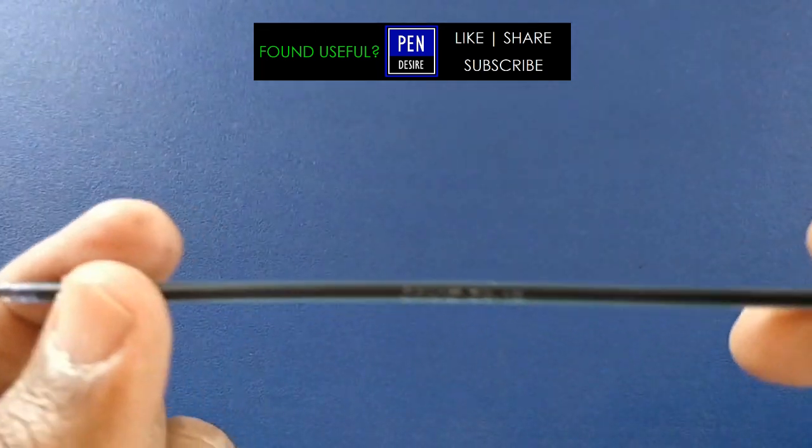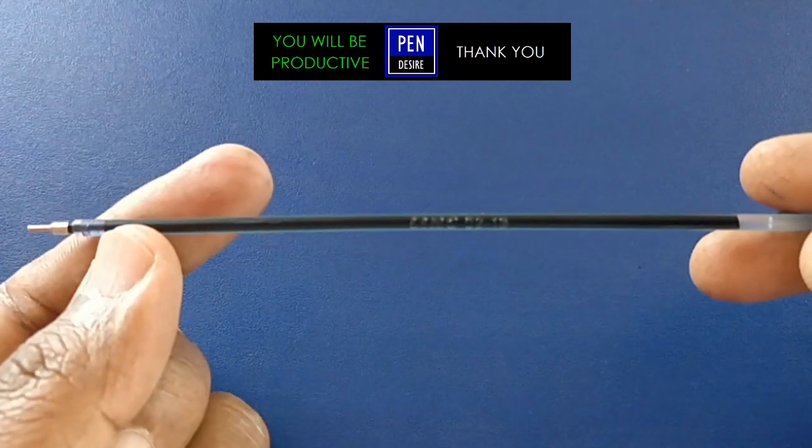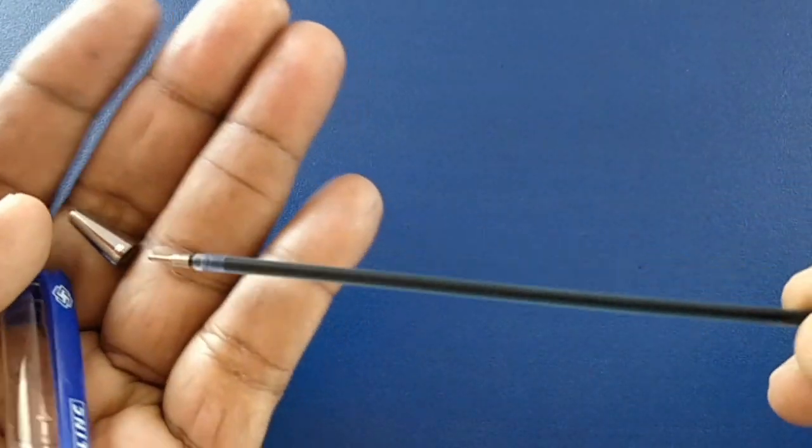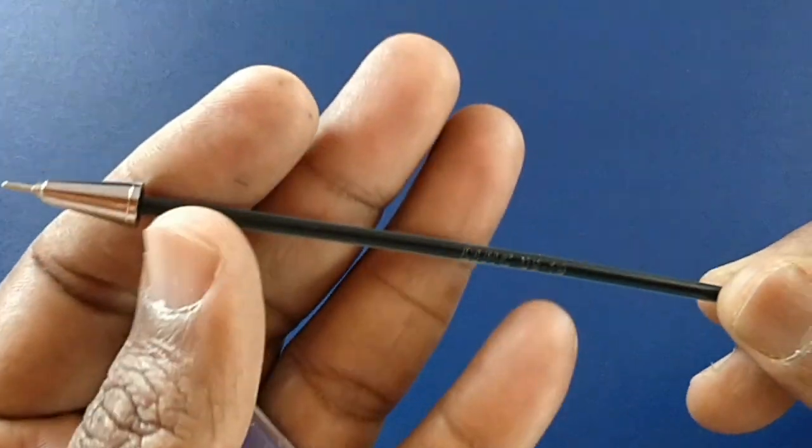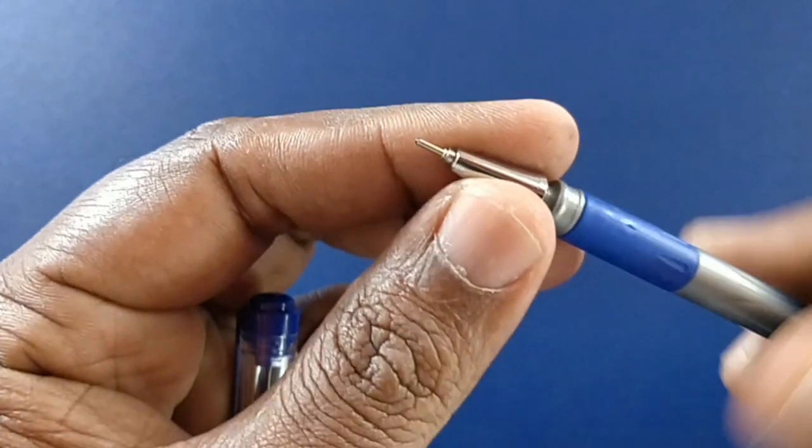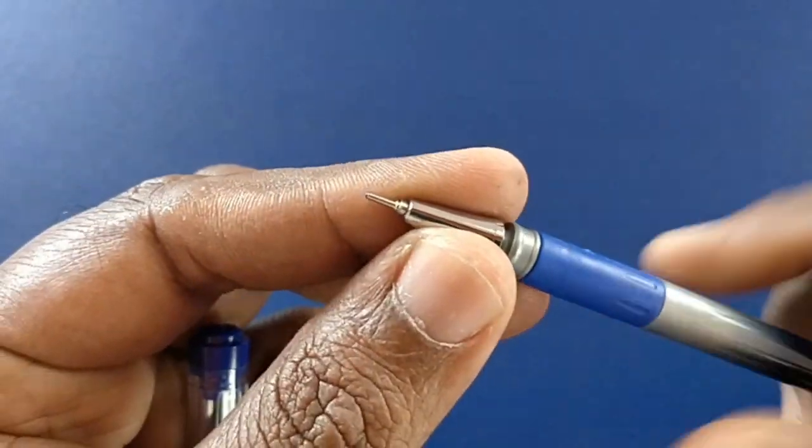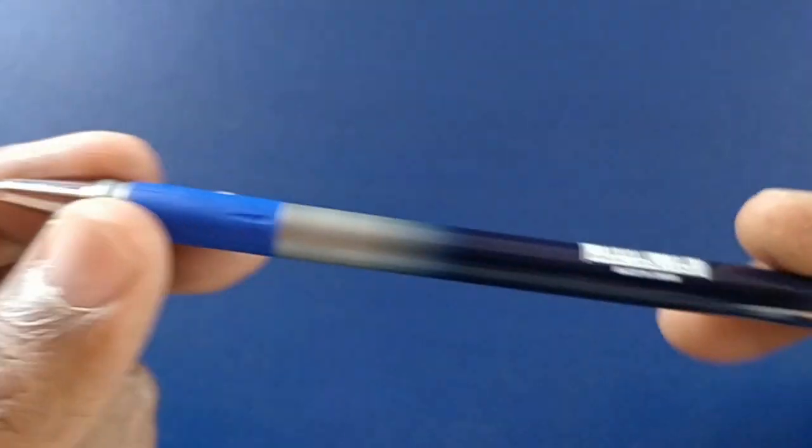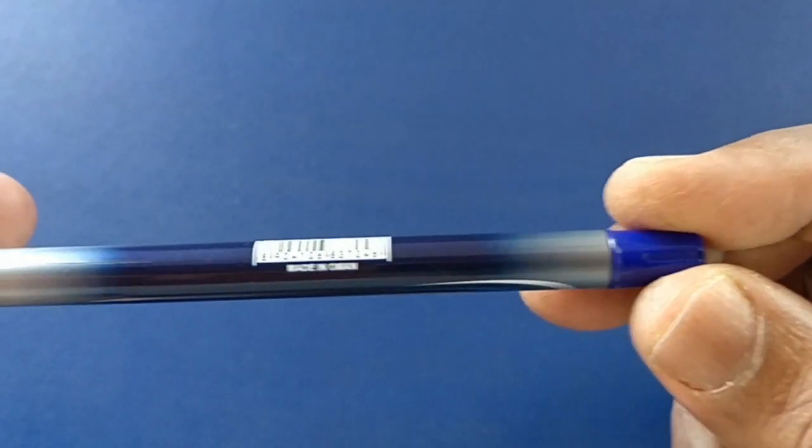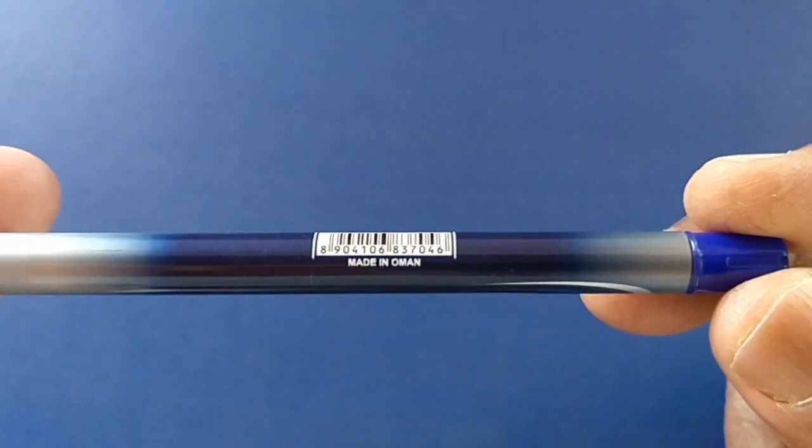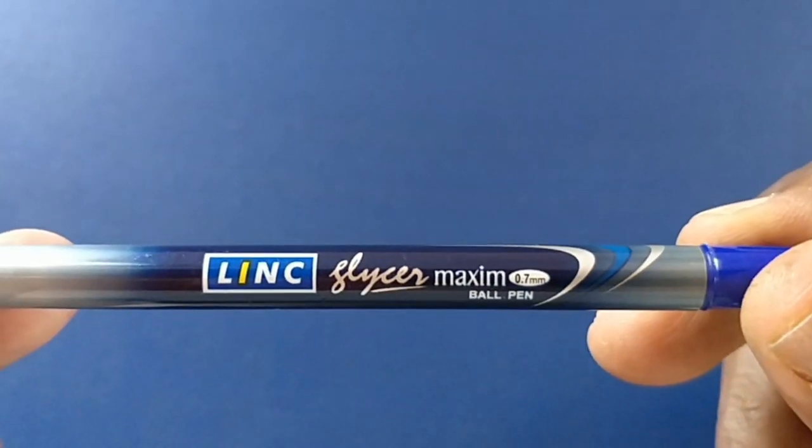Look at the refill - regular refill but with extended needle tip. Take a look at the body. It looks dark gray, but with other Link Glycer pens it looks transparent. The grip area is also nice and made in Omen. Interesting.